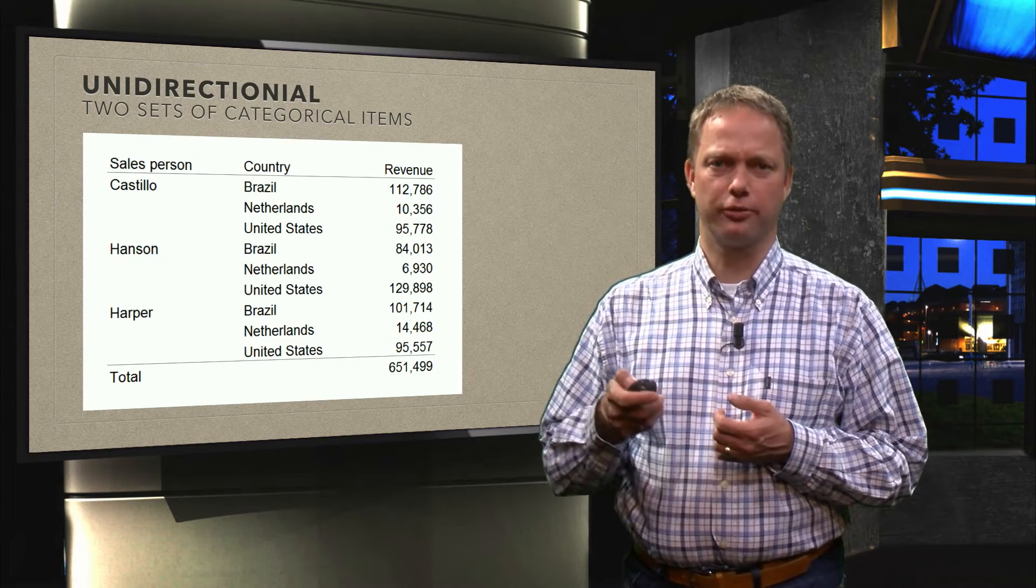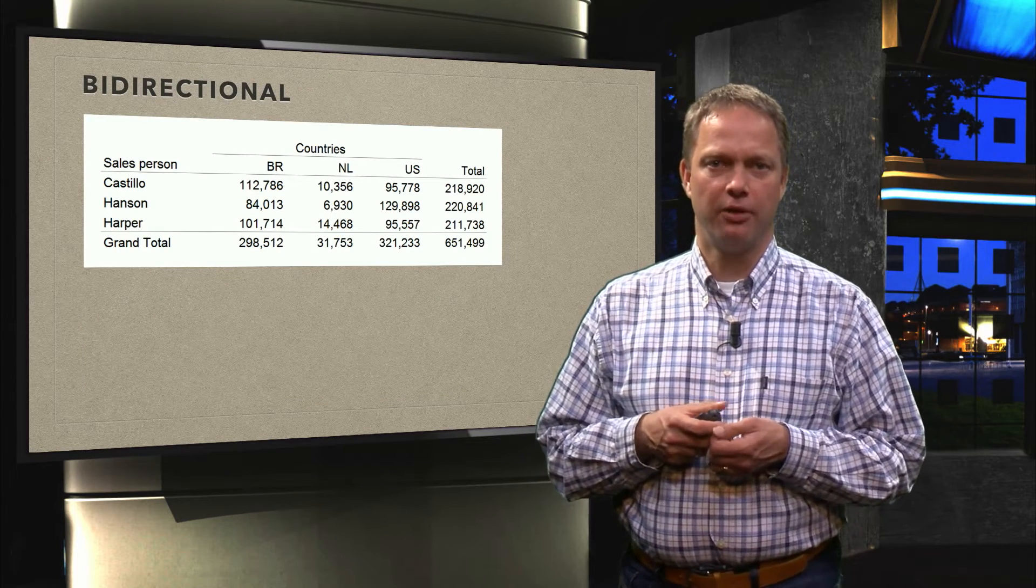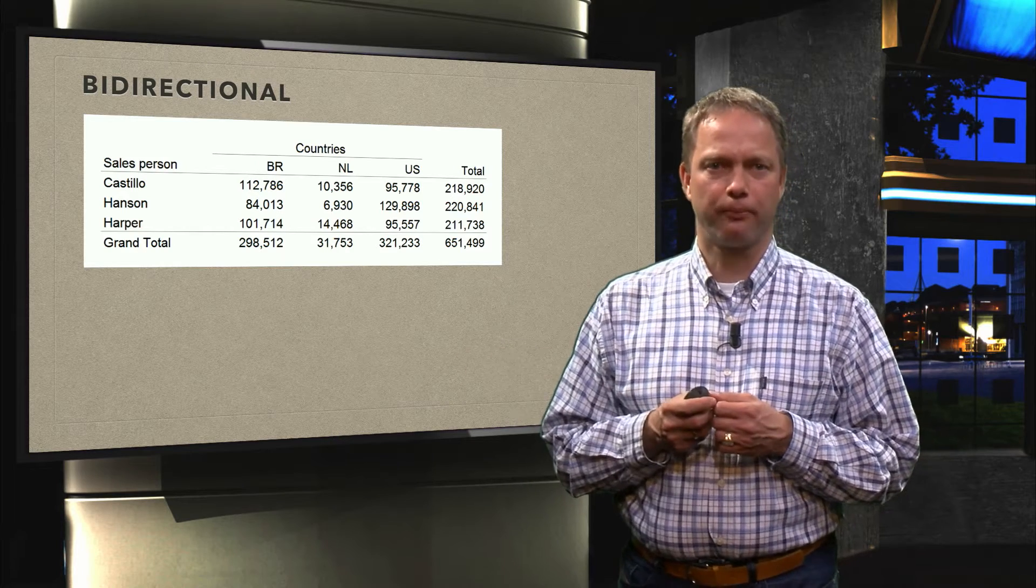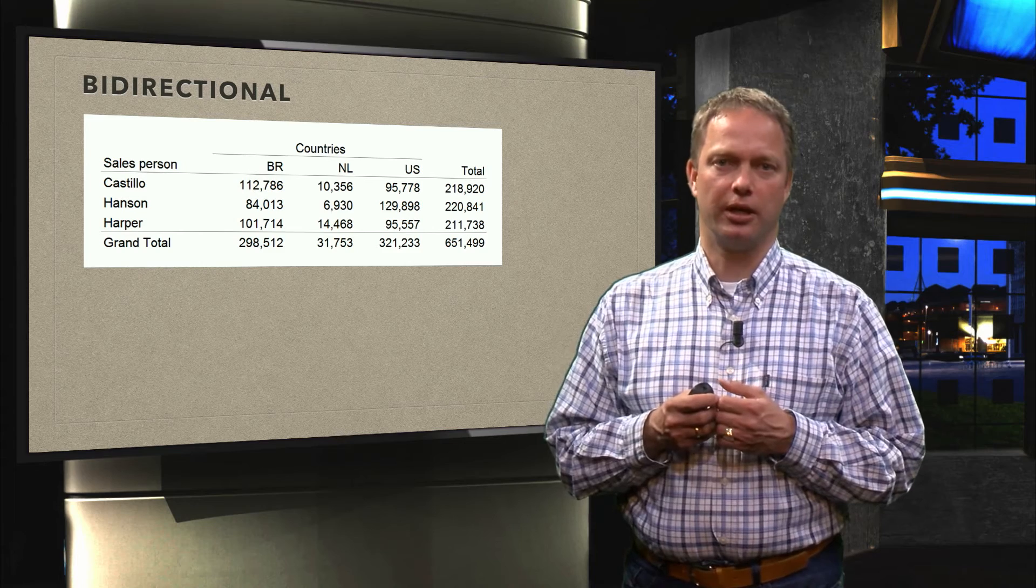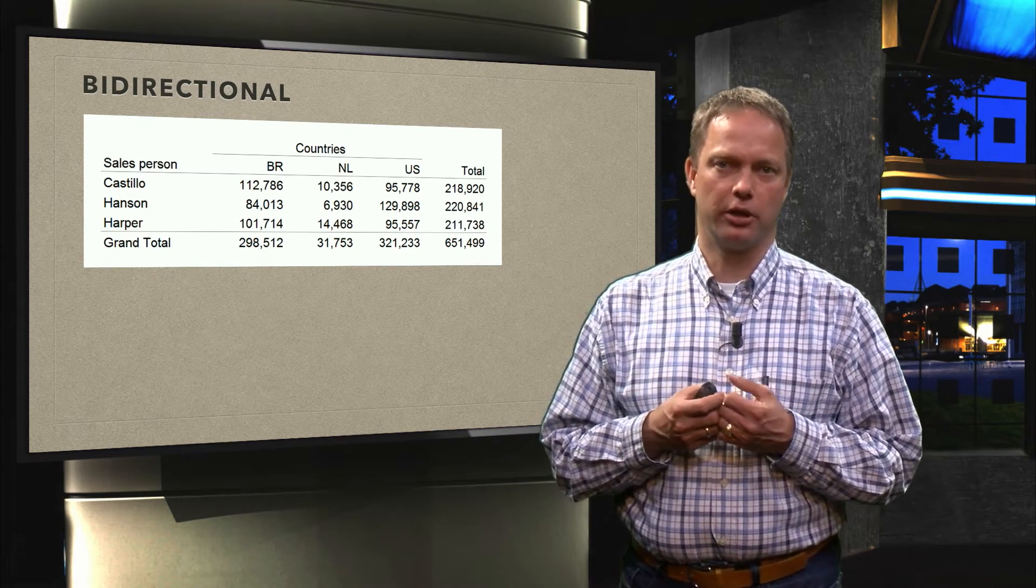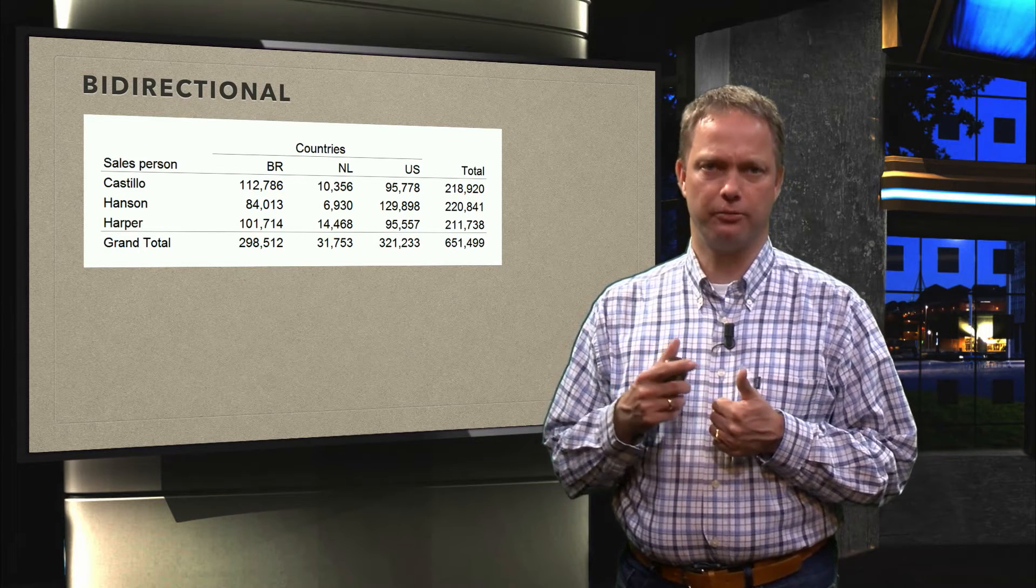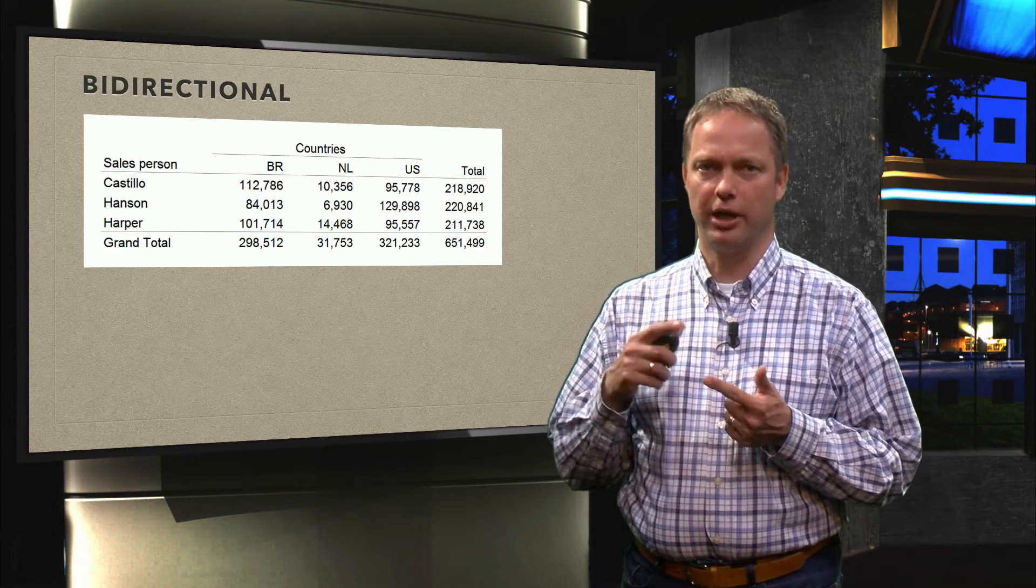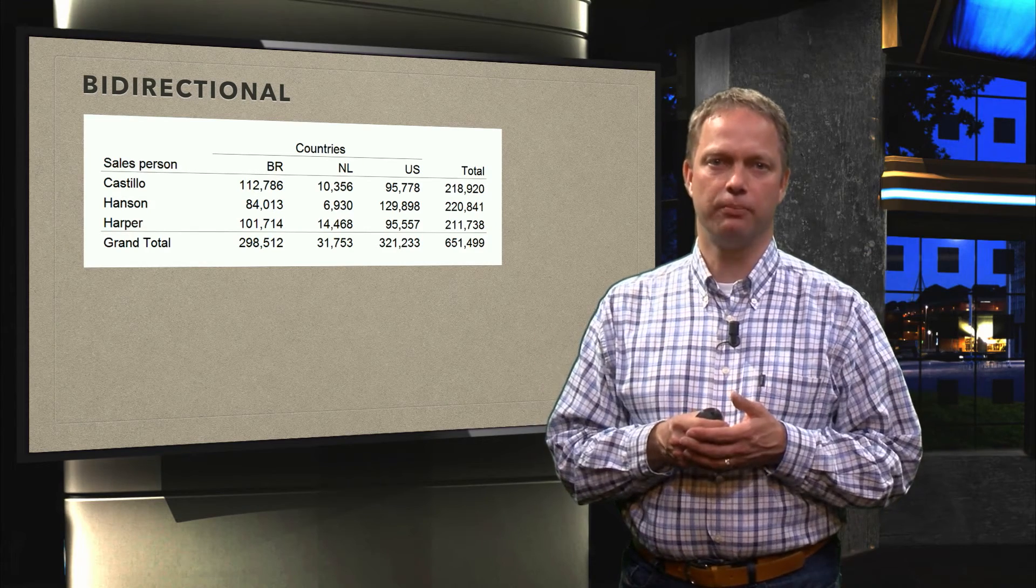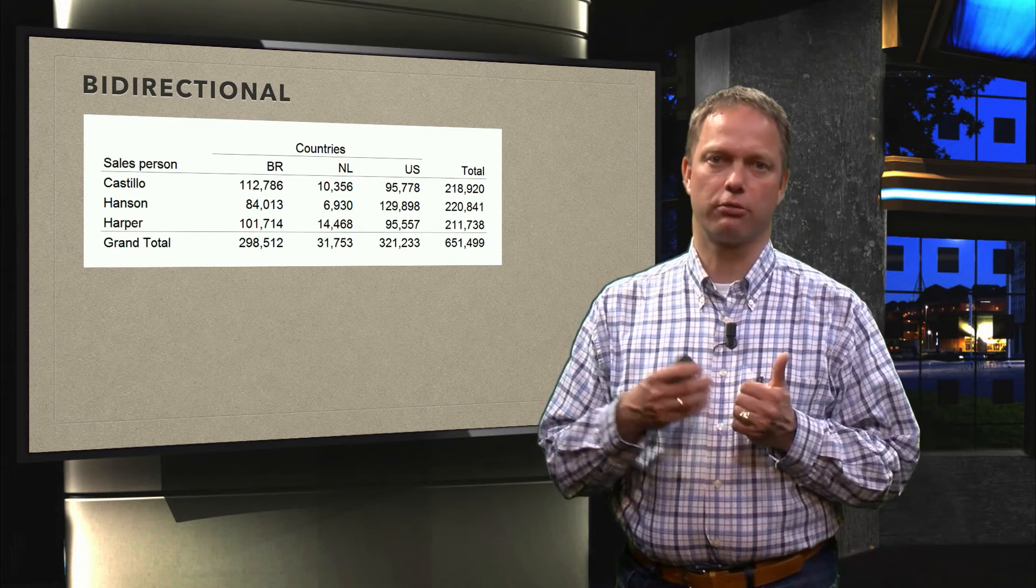But we could also create some kind of a two-dimensional table. It is called a cross table or a bidirectional table. We have the same categories, we have still salesperson and we have countries. But now we have put the countries in the columns and we get a more compact display of our dataset. So that are the three types of tables. We have unidirectional with one category, we have unidirectional with several categories but organized somehow in a hierarchy. And we have a bidirectional table where we have categories across the rows and across the columns.